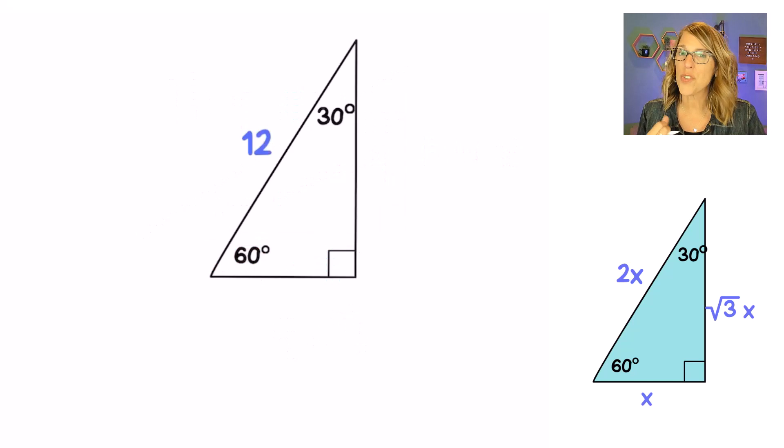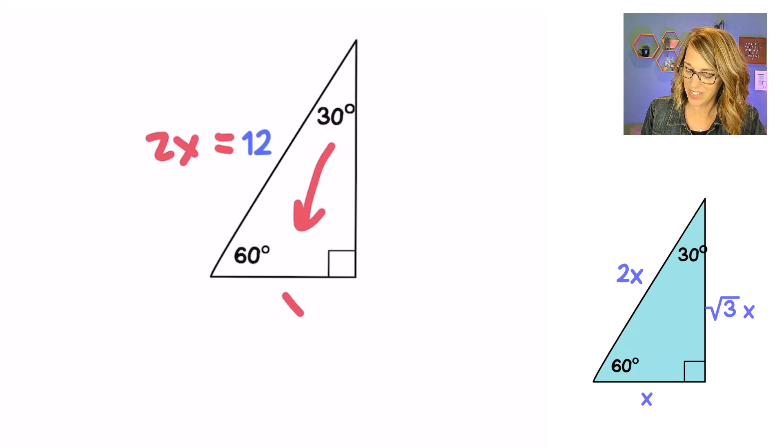On this next one I've got 12 as my known value. This is my hypotenuse so I know that 12 is equal to 2x. The side opposite 30 is x and the side opposite 60 is going to be my square root of 3 times x.